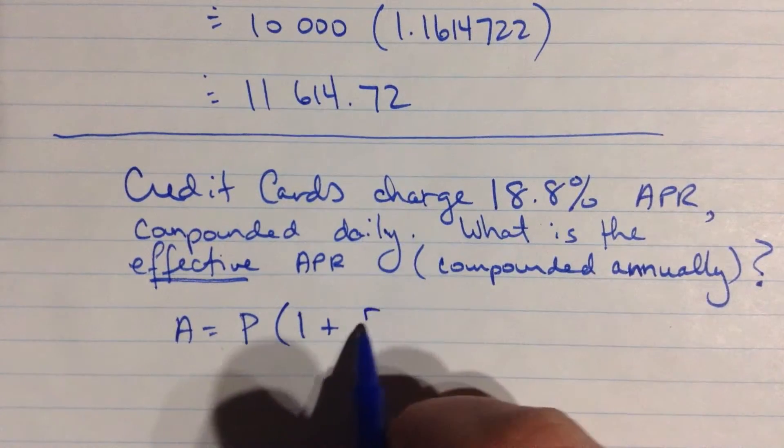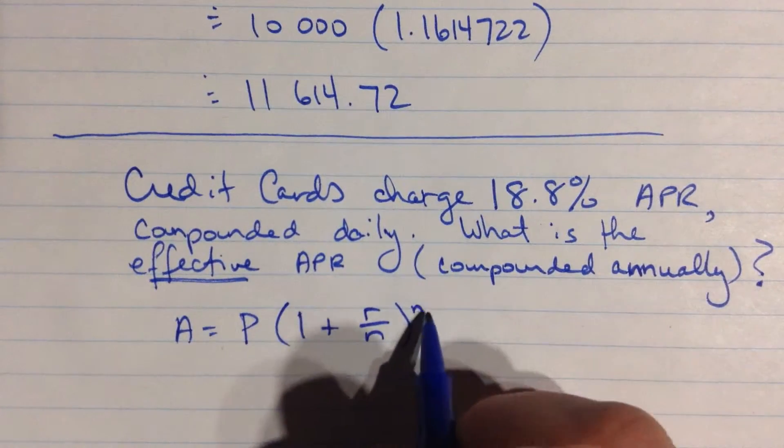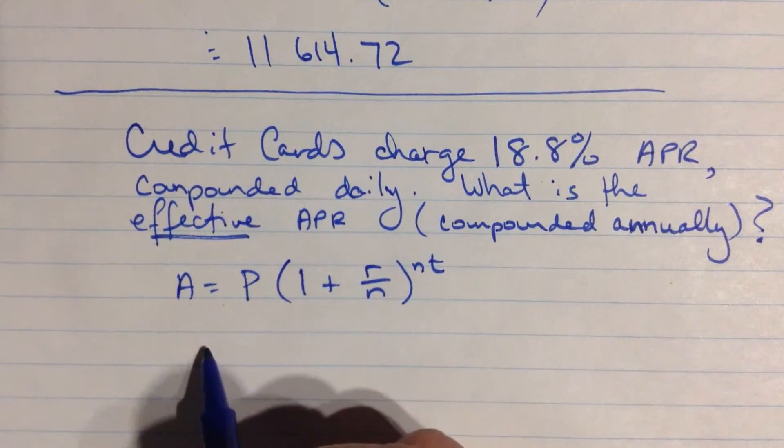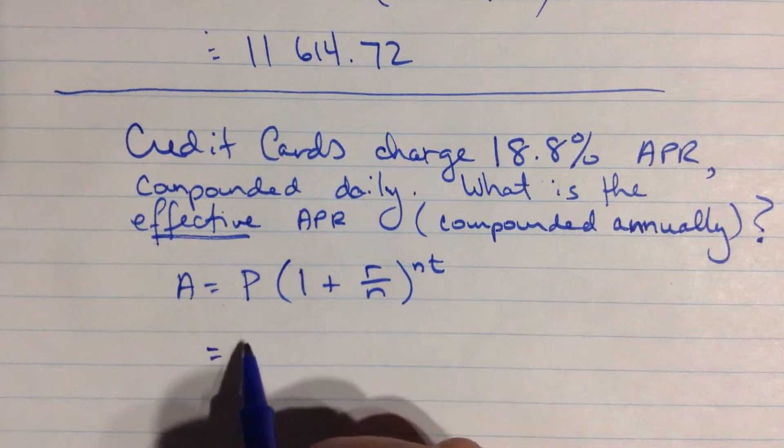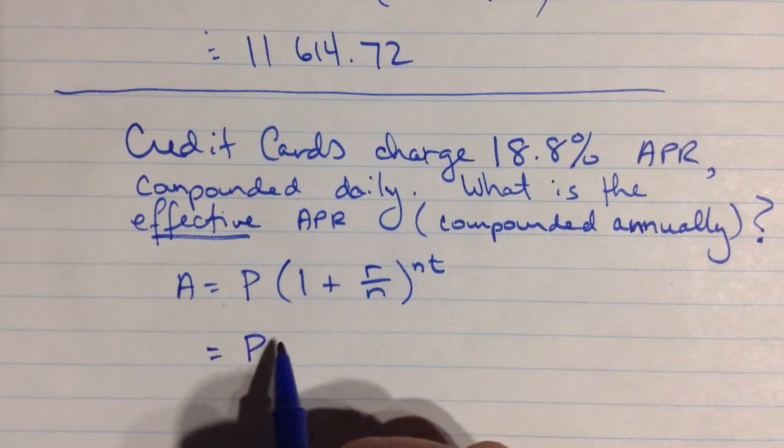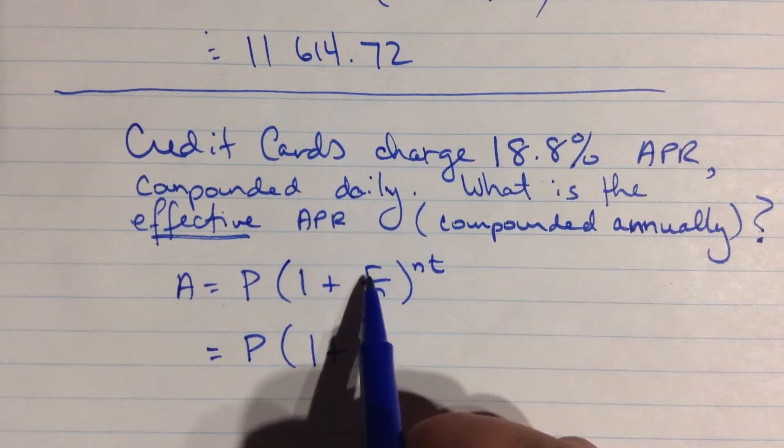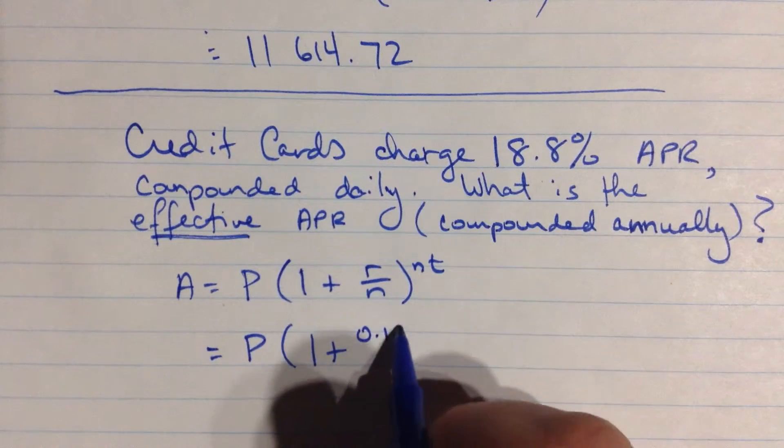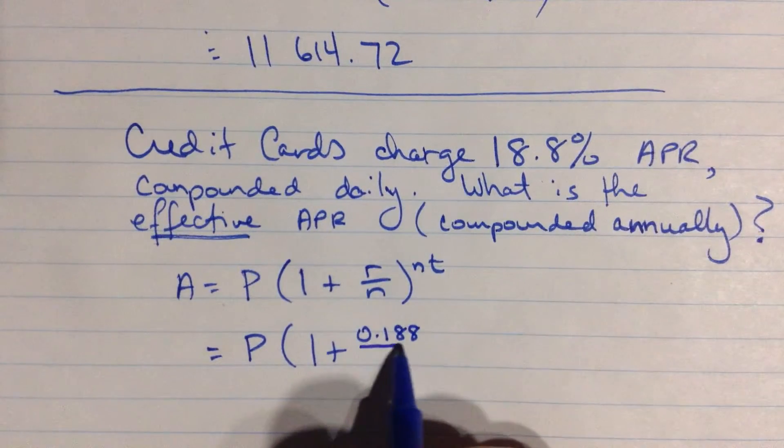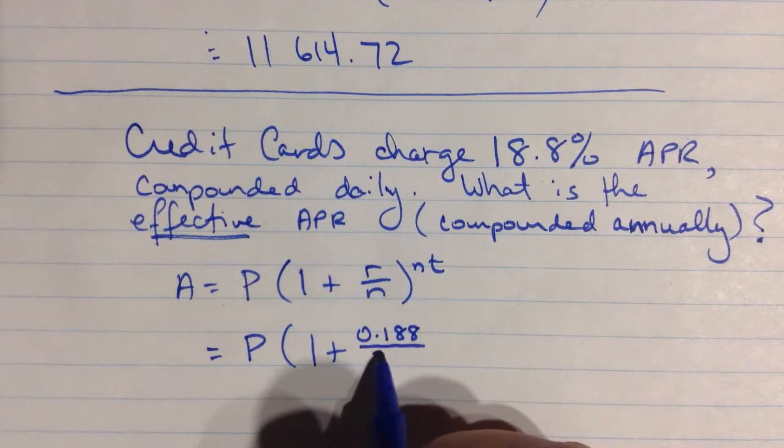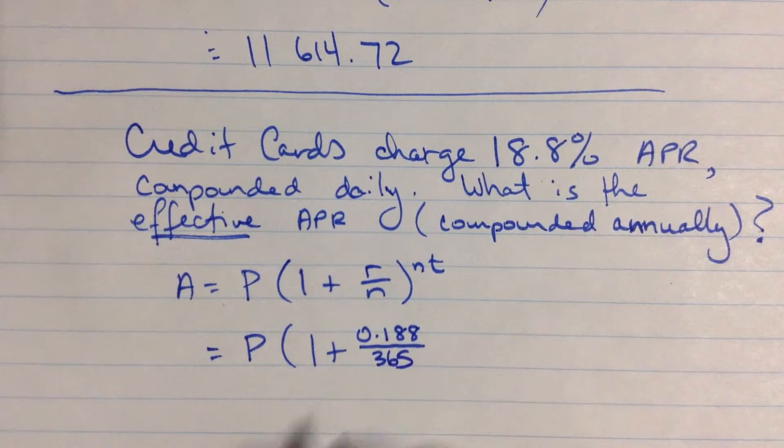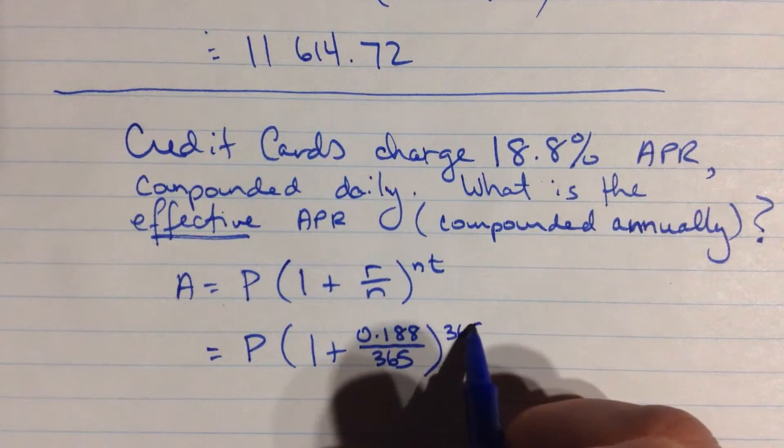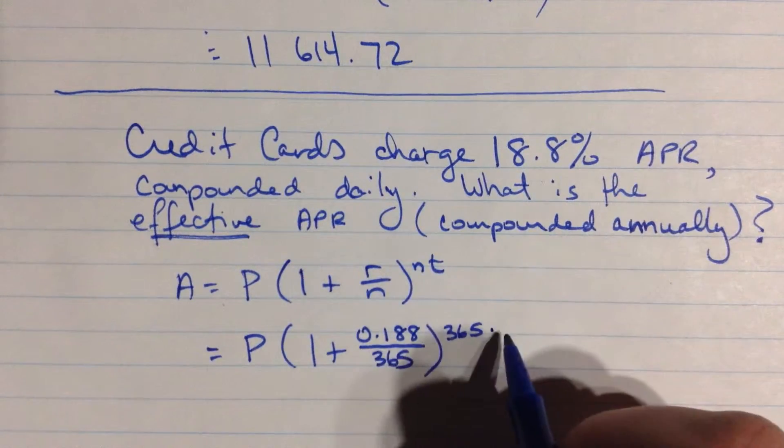So this is 1 plus the rate divided by the number of compounding periods, times the number of compounding periods, times the number of years. So we know that that's P times 1 plus, so we can fill in some of this, 18.8% is 0.188. The number of compounding periods in a year is about 365. We can fill that same number in here, 365 in a year, and I want 1 year.